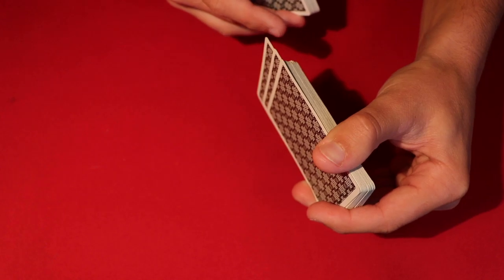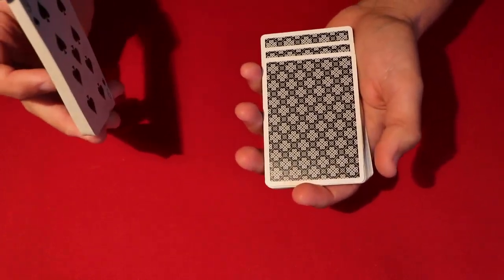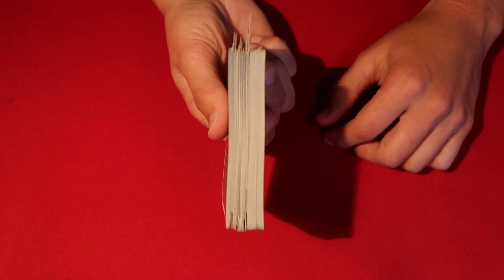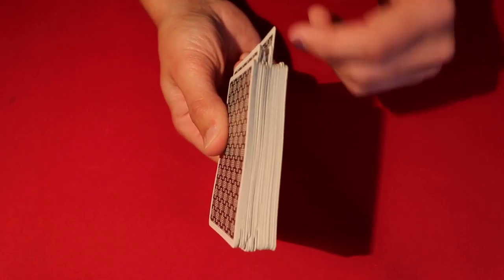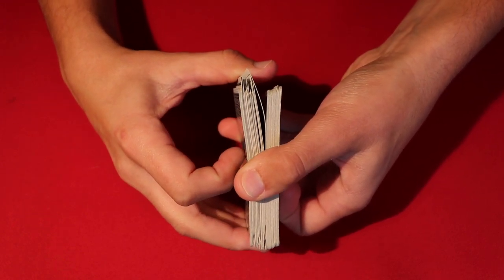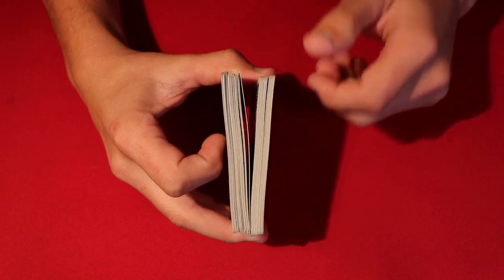So this way, let's say you dribble two cards or so, and then you can continue dribbling but you still have this out-jog. All you have to do is pull up and push in. So you pull up, push in, and now just below this break you have the spectator's chosen card.